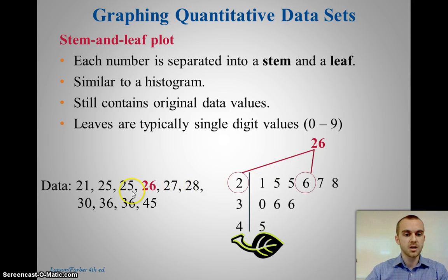For example, as you see here, when we have 26, the stem was 2, which is our tens unit, and then the leaves were all the ones units.